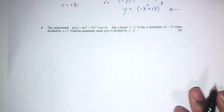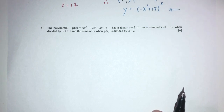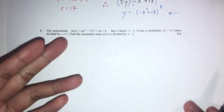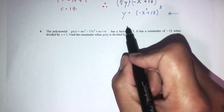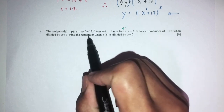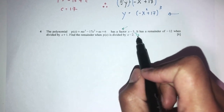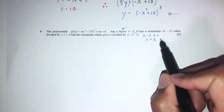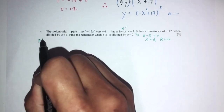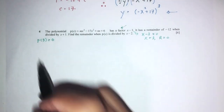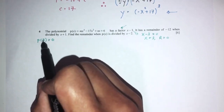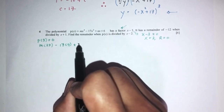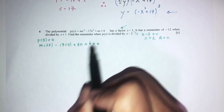Let's move on to question 4. The polynomial p(x) equals mx cubed minus 17x squared plus nx plus 6. Since it has a factor of (x minus 3), the remainder when divided by (x minus 3) is 0. So p(3) equals 0: 27m minus 153 plus 3n plus 6 equals 0, giving 27m plus 3n equals 147. Dividing by 3: 9m plus n equals 49. This is equation 1.